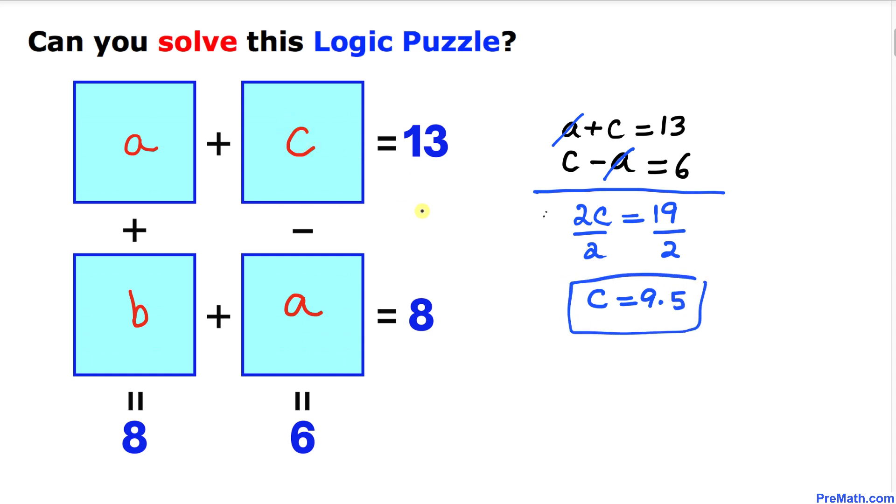Let me replace c with its value, 9.5, in this box. Now let's fill out this box. This box has to be 3.5, so that 3.5 plus 9.5 gives us 13. Since this box is also labeled as 'a', it has to be 3.5 as well.